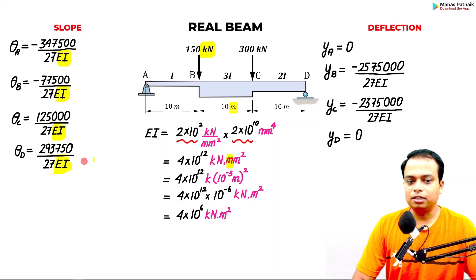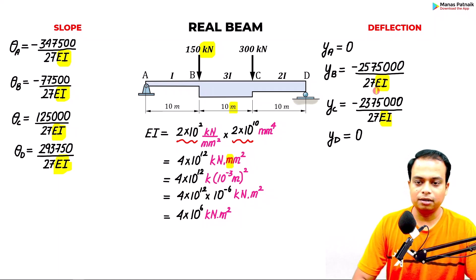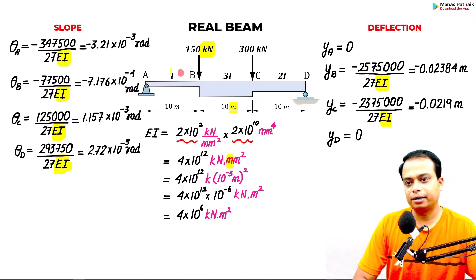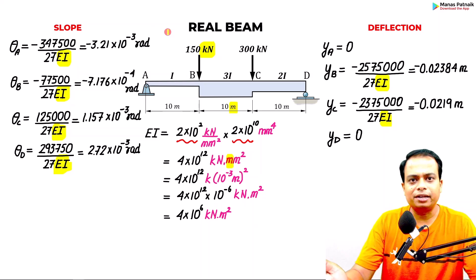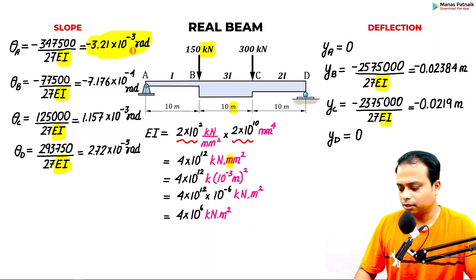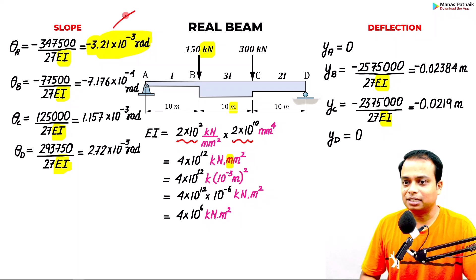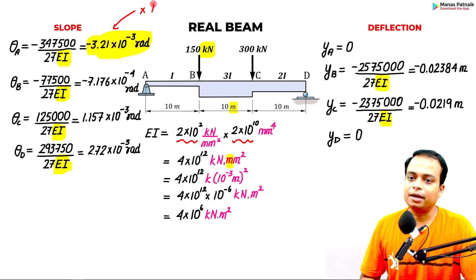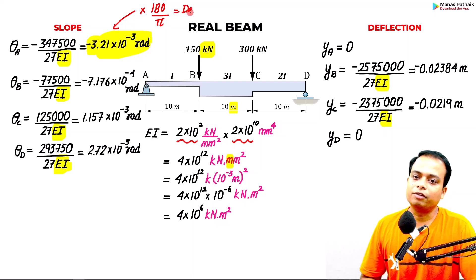Plugging in the value of EI at all locations gives the final slope values in radians. If you wish to convert to degrees, multiply by 180/π to get the corresponding values in degrees.